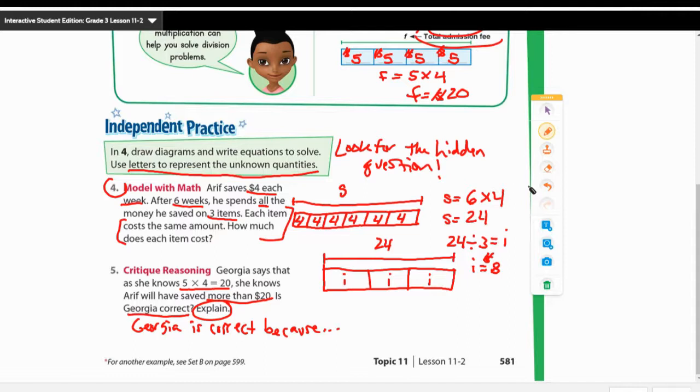So if she says that five times four equals 20, you can tell what she's doing here is she's trying to estimate. She says five times four equals 20 because that's an easy problem for her to solve. Most of you know how to skip count by fives. They're relatively easy. Five times four equals 20. So then she can estimate that it has to be more than 20 because he didn't just save for five weeks. He saved for six weeks. So I want to see you write that out right there.